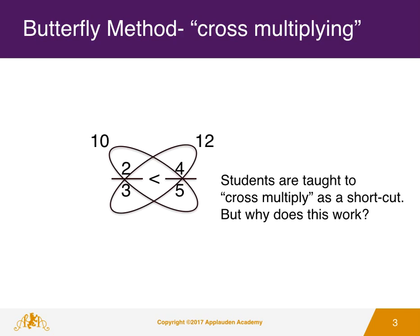2 times 5 equals 10, and 3 times 4 equals 12. Since 12 is greater than 10, four-fifths is also greater than two-thirds.